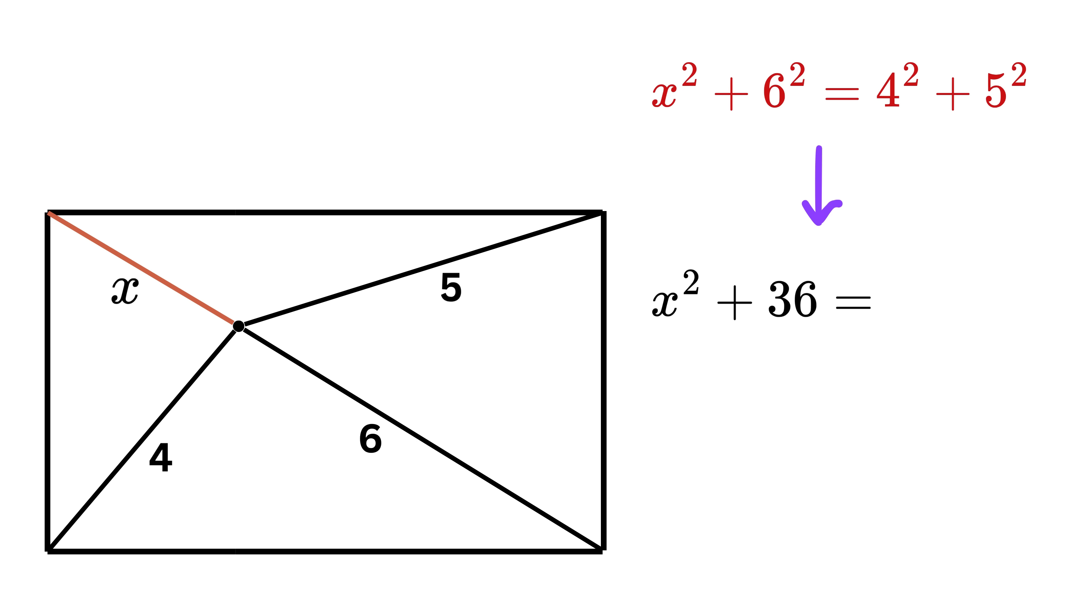So, this becomes X square plus 36 is equal to 41. Subtract 36 from both sides and we get X square equals 5, which means the unknown length X is equal to the square root of 5. And that's it.